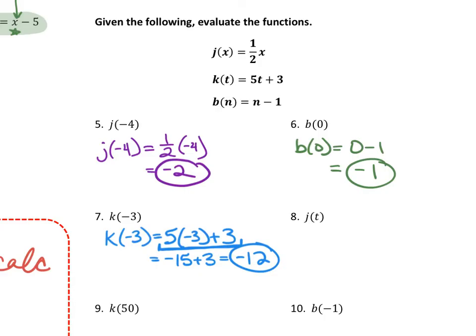Number eight is a bit different. It says take the j function and plug in a t. Here's function j — instead of x, I put a t, so it reads one half t. Since I don't have any numbers to calculate, I'm done. One half t is the evaluated version of j of t. I've replaced every x in the j function with t. You can only calculate if there are just numbers, like in numbers five, six, and seven.